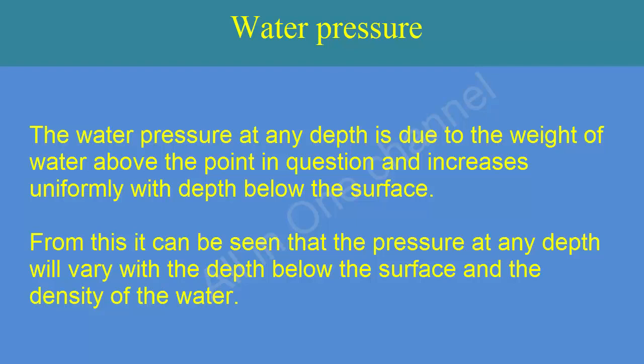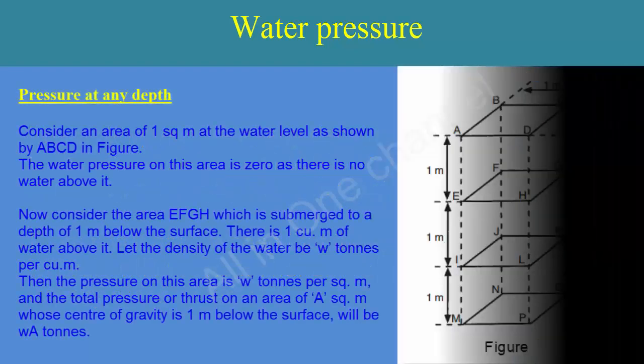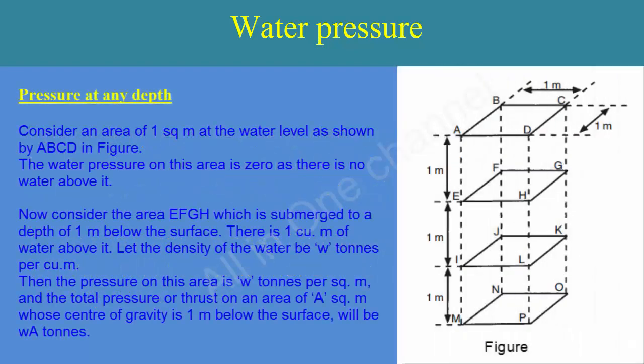Consider an area of 1 square meter at the water level, as shown by ABCD in the figure. The water pressure on this area is zero, as there is no water above it. Now consider the area EFGH, which is submerged to a depth of 1 meter below the surface.